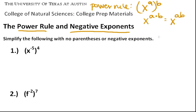Also, when you have negative exponents — say we have x to the minus three — that just means that to get rid of that negative exponent, you would place it under one. So in this case, it would be one over x to the third. This is how you can simplify numbers raised to multiple powers and also handle negative exponents.